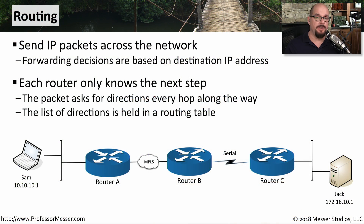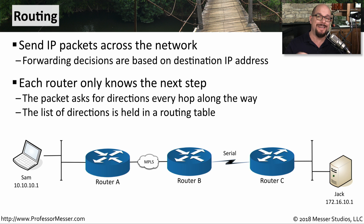If you're watching this video on the internet, the packets containing this video content are hopping through a number of different routers to get to your workstation. These routers make forwarding decisions based on what the destination IP addresses contain within those packets. Each router only knows what the next step is to get the packet along its way. There's a list of these next steps contained within every single router, and this is called the routing table.